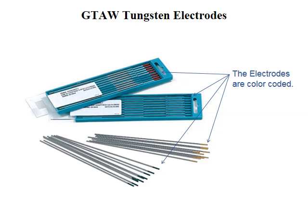Gas tungsten arc welding electrodes: tungsten can withstand higher temperatures than all other metals, but it can also be consumed if the arc temperature is too hot. Therefore, there is a limit to the current carrying capacity of tungsten electrodes. This limit, together with the heating characteristics of the work, should be taken into account before the start of welding operations. The size of the electrodes is determined by the current, which in turn is a function of the material thickness. Also note that tungsten electrodes for GTAW can be identified by painted end marks.